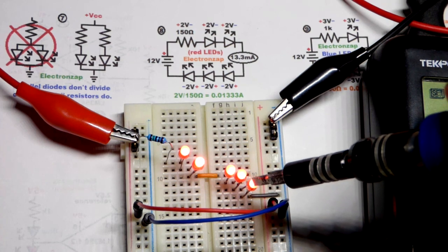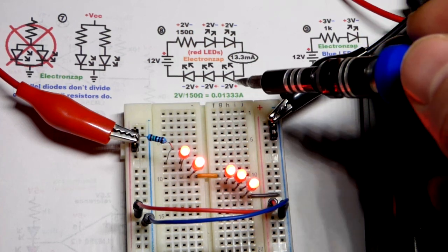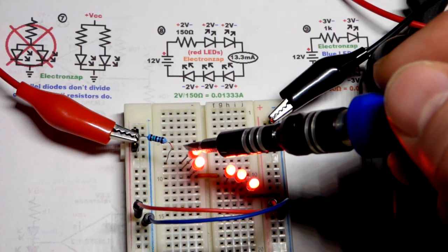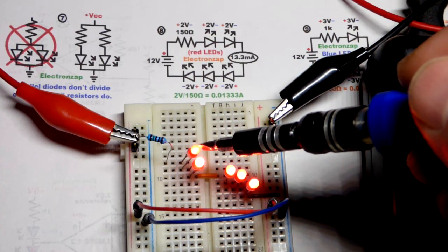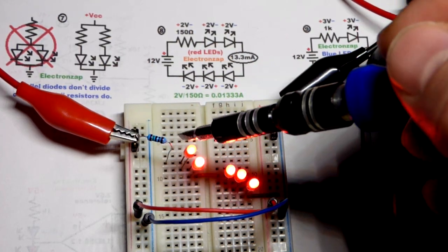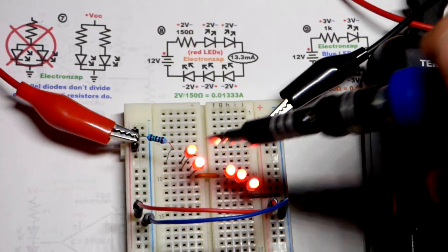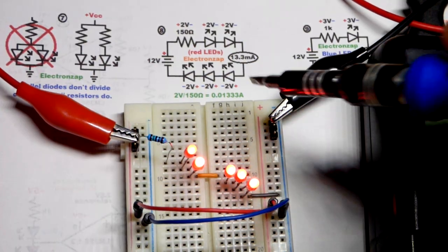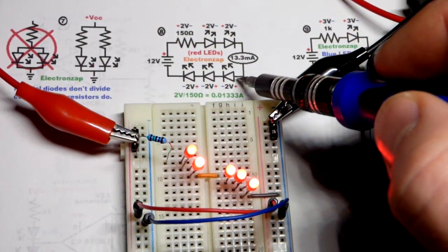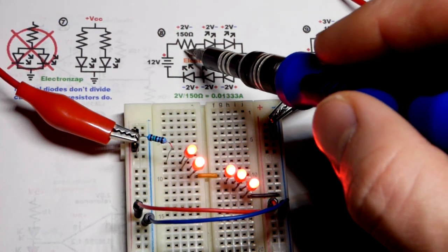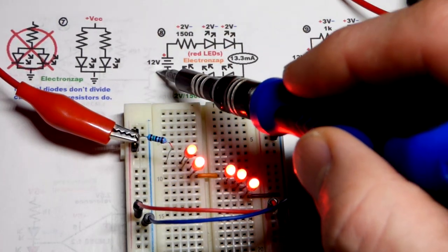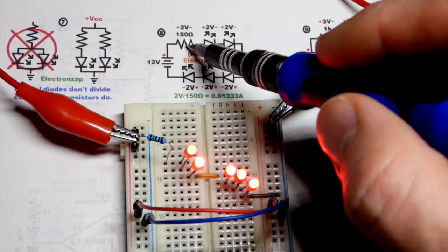The LEDs are dropping about two volts each. So that's something you should learn early on in electronics. A red LED probably drops about two volts. Maybe there are specialty LEDs out there where they drop a different amount. But these little indicator LEDs, you can expect two volts. When you put them in series though, that voltage drop adds up.